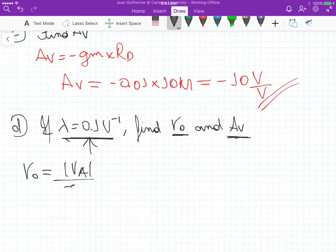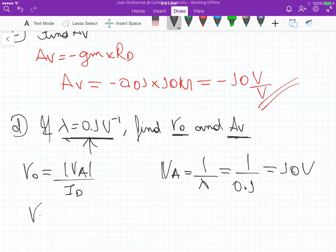So Rout here is 10 divided by 0.1 milliamps, which equals 100k ohms.